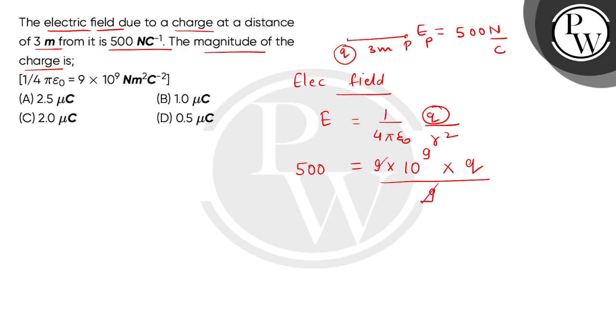तो 9, 9 is cancelled. So हमें Q का answer मिल जाएगा 500 multiplied by 10 to the power minus 9 coulomb.